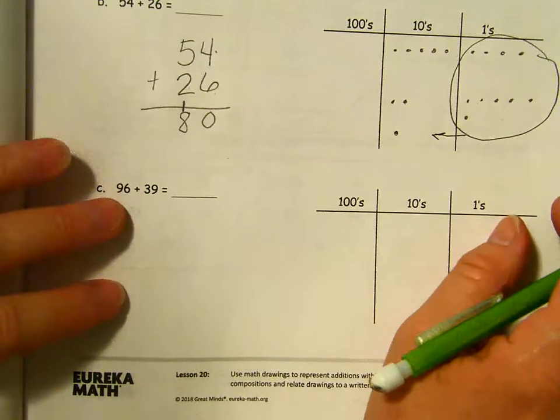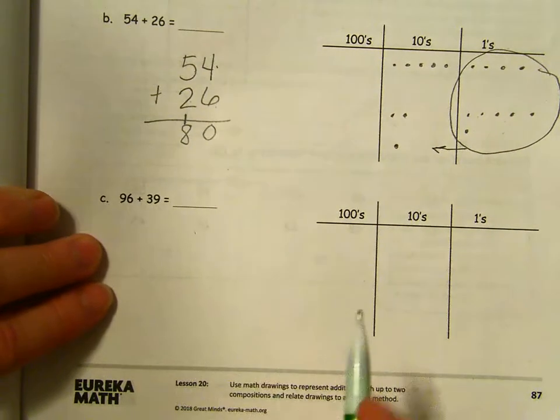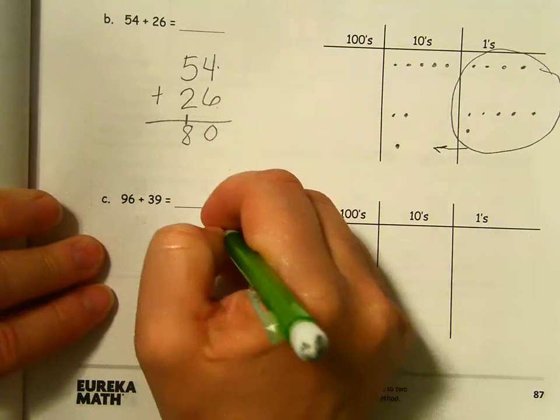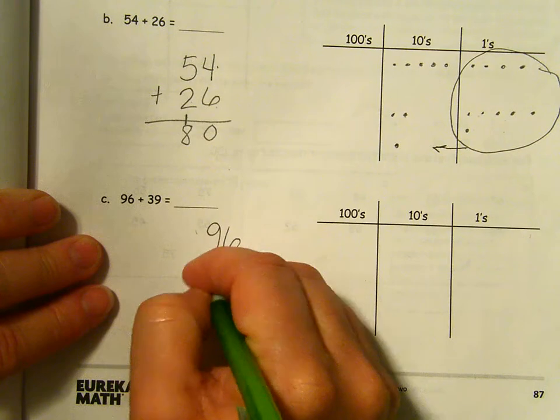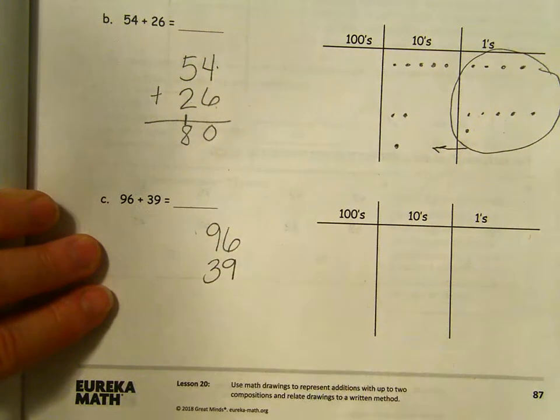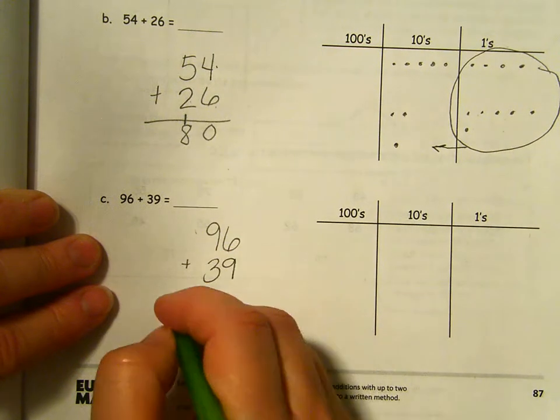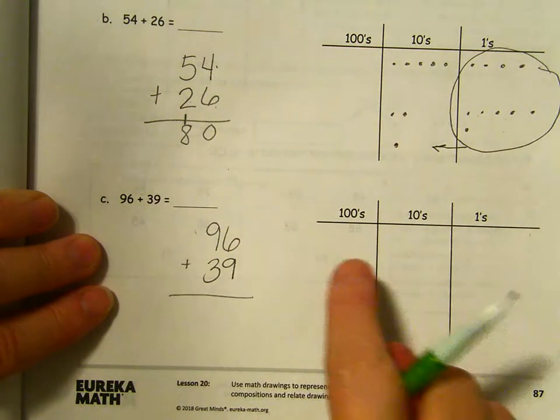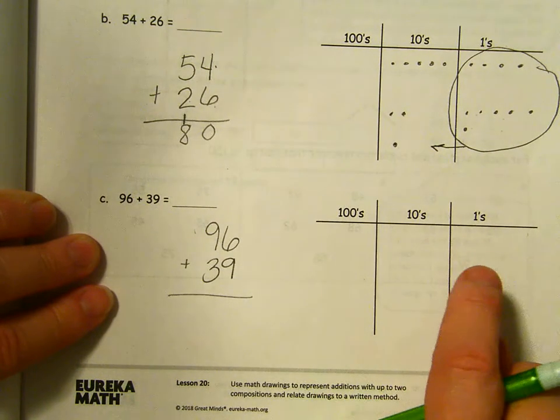Moving up to do the last one on this page. 96 plus 39. Writing it vertically. 96. Make sure I'm lining up 39 right underneath my ones, my tens.